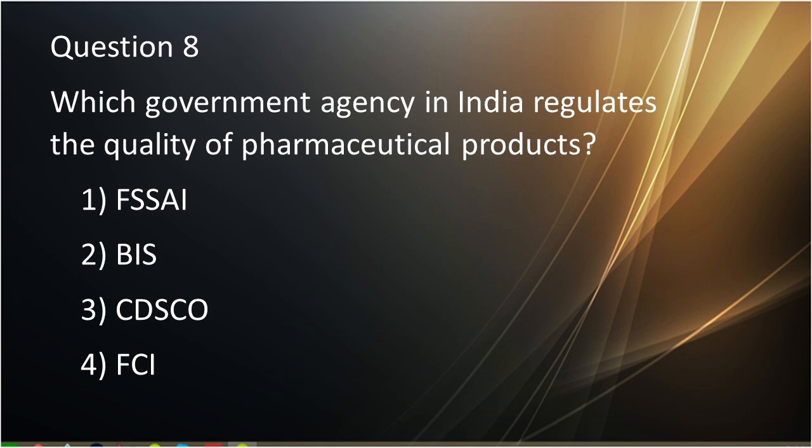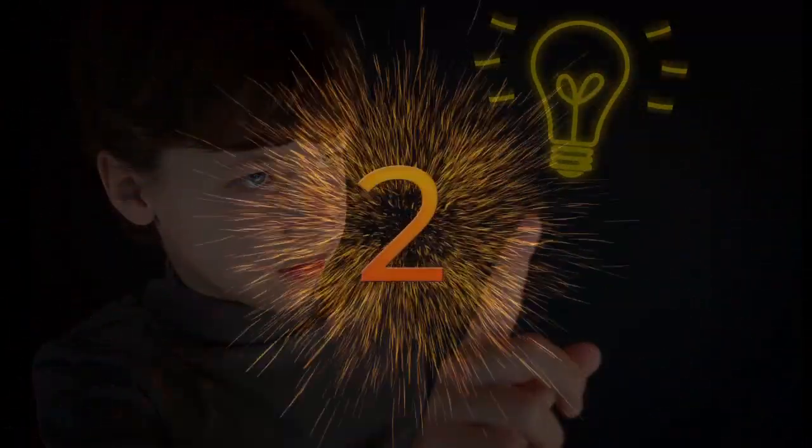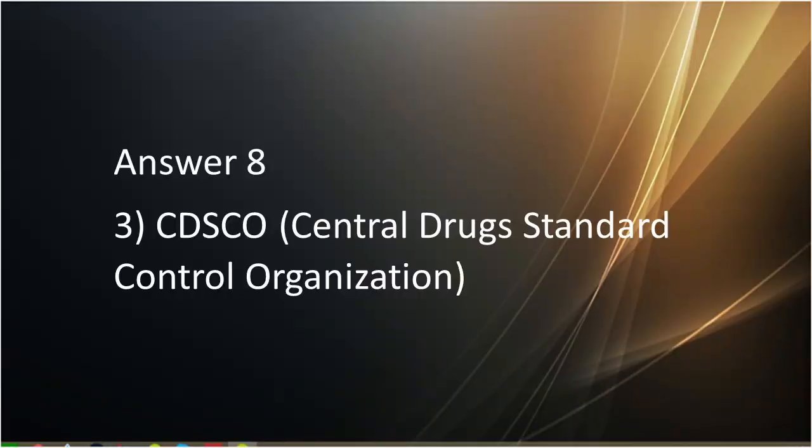Question number eight: Which government agency in India regulates the quality of pharmaceutical products? First is FSSAI. Second is BIS. Third is CDSCO. Fourth is FCI. Answer to question number eight is CDSCO, which is the Central Drug Standard Control Organization.